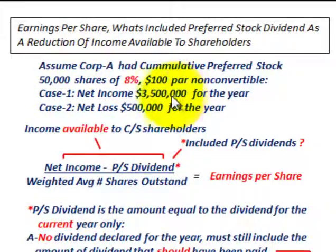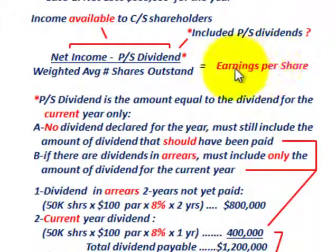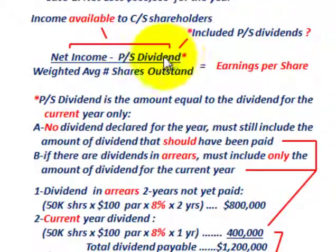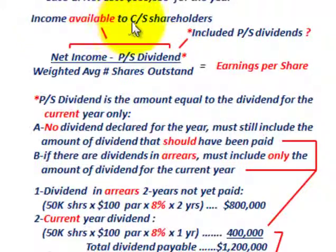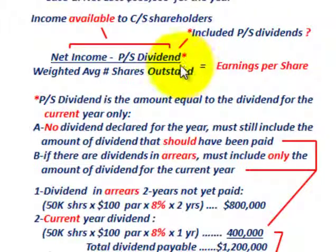We'll look at two cases: a net income of $3.5 million and a net loss of $500,000. The general earnings per share equation takes net income, subtracts the preferred stock dividend, and divides by the weighted average number of shares outstanding. Net income less the preferred stock dividend gives us income available to common stock shareholders, which is what EPS is based on.